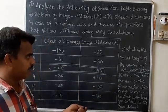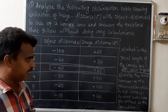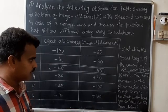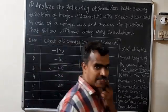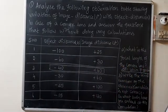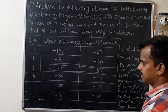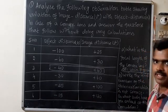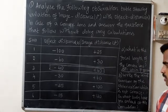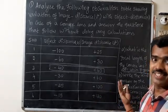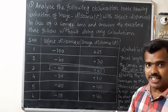Write the serial number of the observation which is not correct, on what basis have you arrived at this conclusion? Which number is incorrect? We need to find out which one is incorrect. Check the serial number 6, minus 15 plus 180. Is it possible? Plus 130 means right side.